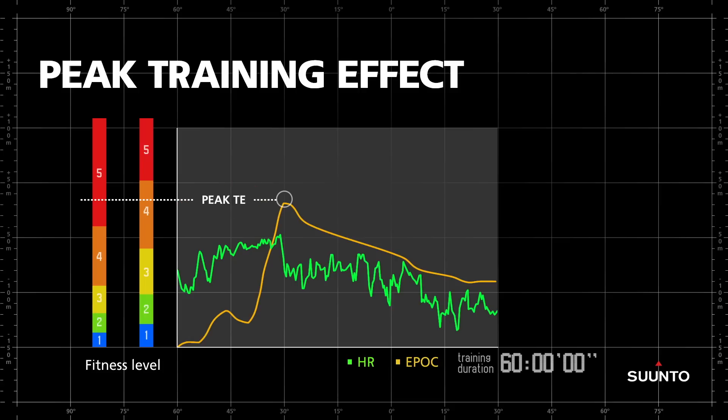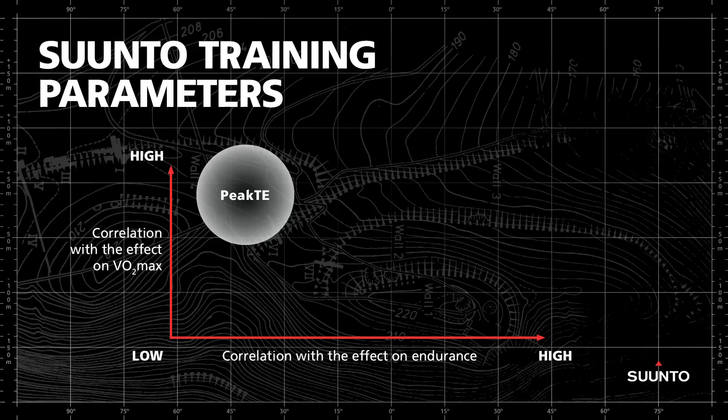In other words, peak training effect is the impact a training session has on your Maximal Aerobic Performance, or VO2 max. The mathematical modeling of peak training effect was fully developed by Suunto and is optimized for Suunto devices.